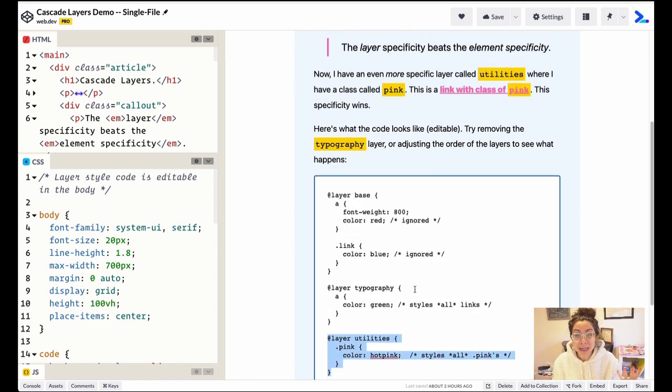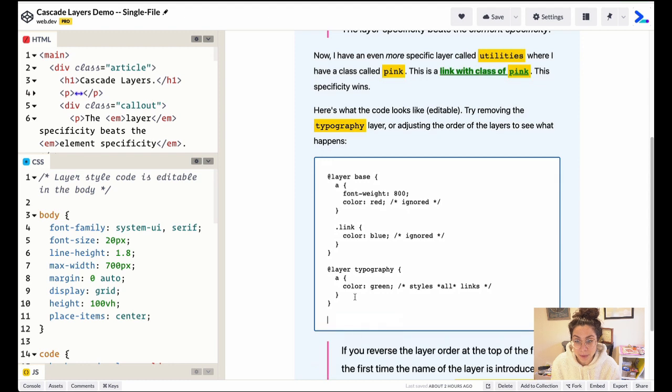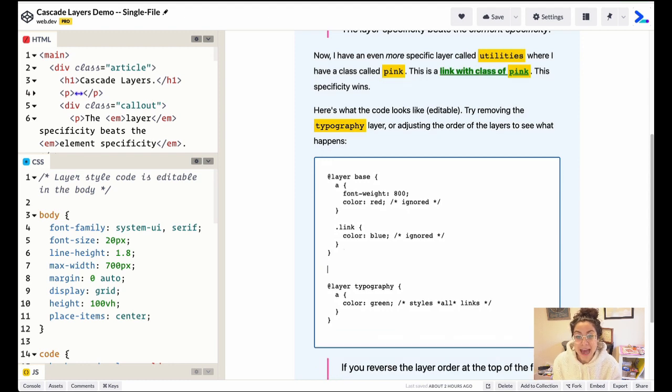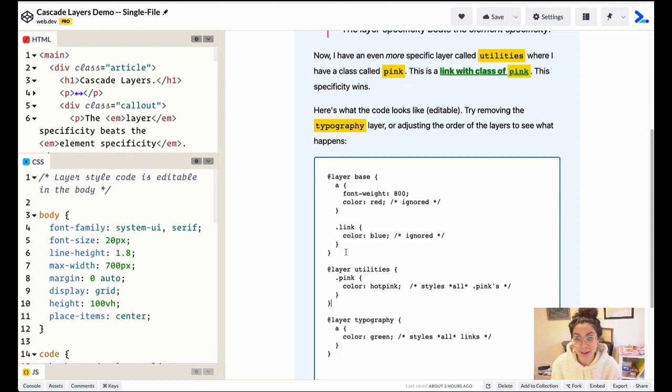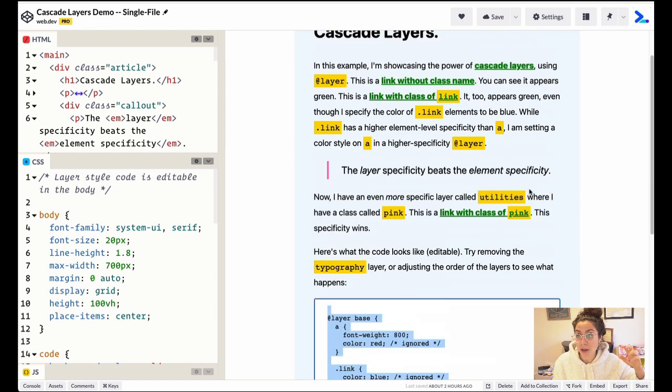If we were to reorganize these styles, if I was to move utilities after base, but before typography, this utility class wouldn't apply because again, the specificity of this a tag, even though it's a lower element specificity, it has a higher layer specificity and therefore is overriding both of these, everything in here. Now all of the links are green.